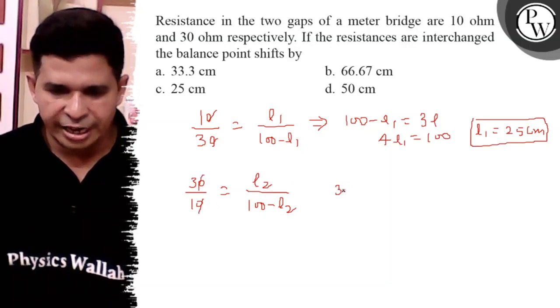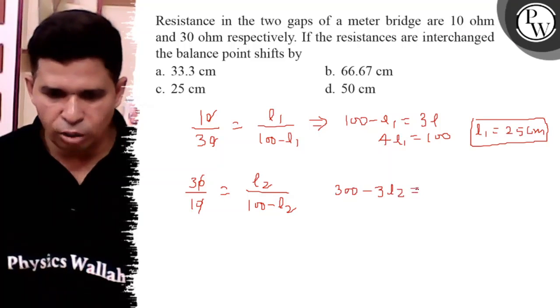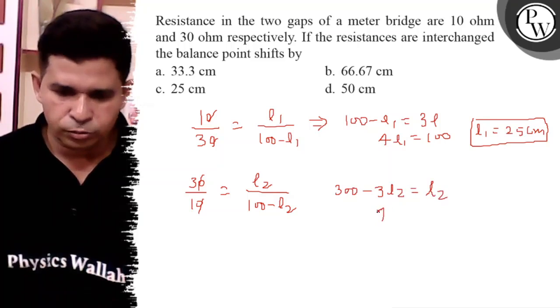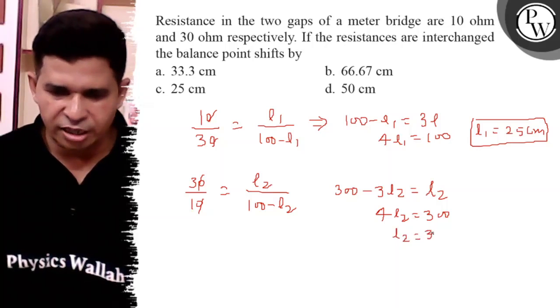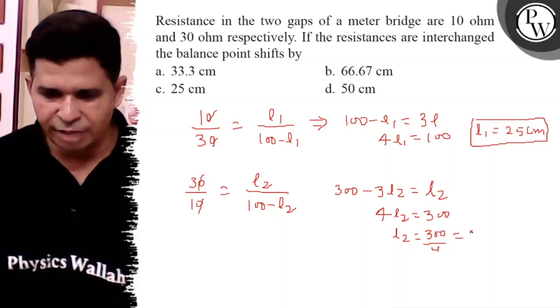Now similarly solve that equation and find the value of L2. 300 minus 3L2 is equal to L2, so 4L2 is equal to 300 by 4, that is 75 centimeter.